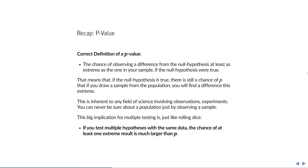This uncertainty is inherent to any field of science involving observations or experiments. You can never be sure about a population just by looking at a sample. This has a very big implication for multiple testing, because just like rolling the dice several times, if you test multiple hypotheses with the same data, then the chance of at least one extreme result, or one low p-value, is actually much larger than p. And thereby, the chance of a false positive grows unacceptably large.